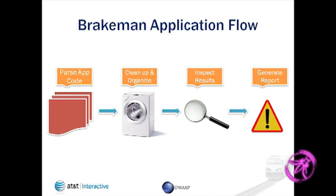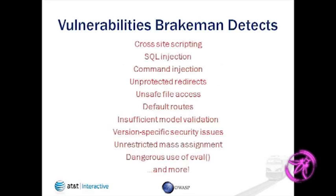The way Brakeman works is it first parses the code, does some cleanup and simplification of the abstract syntax tree, then looks at the results, runs multiple checks on it, and generates a report. Here's the list of some of the vulnerabilities it detects — all the standard ones: cross-site scripting, SQL injection, command injection, redirects, file access — basically most of the things you can detect statically.